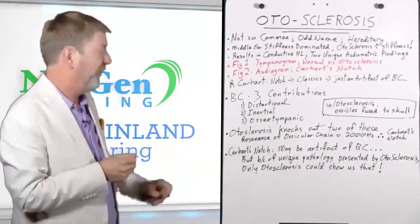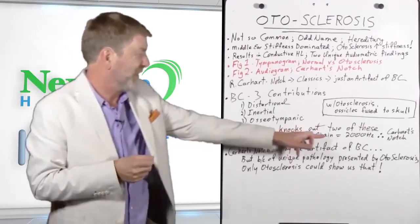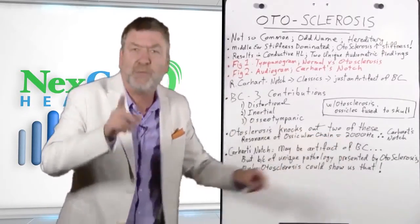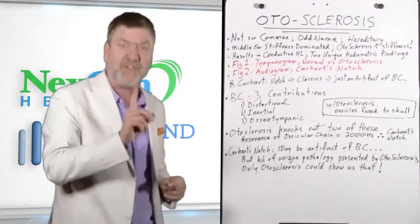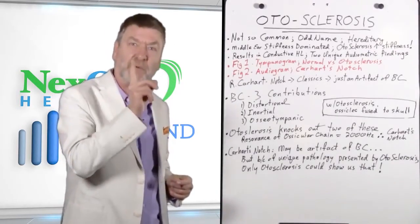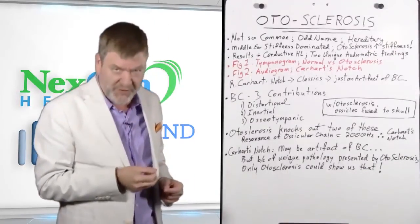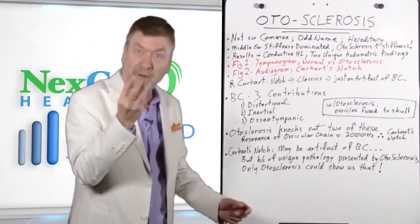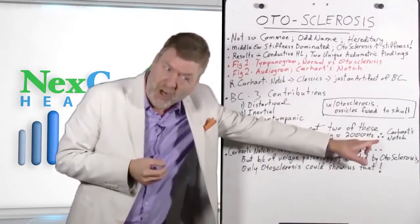But why is Carhartt's notch always at 2,000 Hz? Because the resonance of the middle ear ossicles is around 2,000 Hz. And with the bones fused to the skull and the lack of these two contributions, putting it all together, you end up with a slight loss of bone conduction hearing sensitivity at 2,000 Hz, the resonance of the middle ear ossicles.